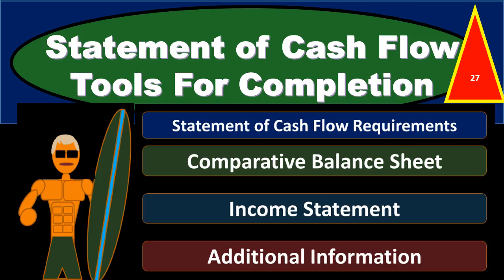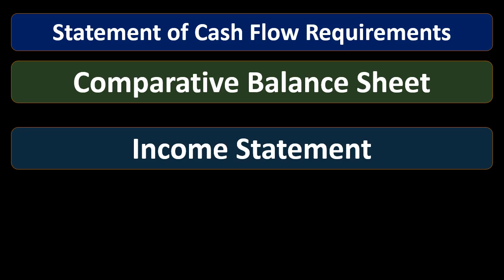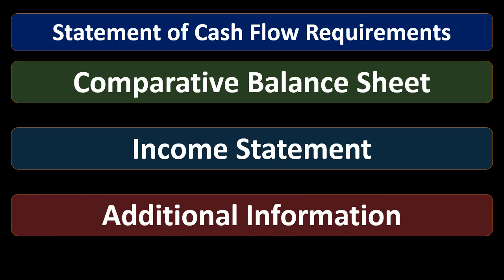In this presentation we will take a look at the tools needed to complete a statement of cash flows. To complete a statement of cash flows we are typically going to need a comparative balance sheet — including a balance sheet from the prior period and a balance sheet from the current period. Then we're going to need an income statement, and then we'll need some additional information.